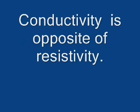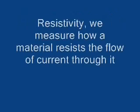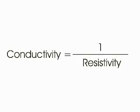By this explanation, it is quite clear that conductivity of material is opposite property of resistivity. We know that, by resistivity, we measure how a material resists the flow of current through it. Hence, mathematically, conductivity is the reciprocal of resistivity.